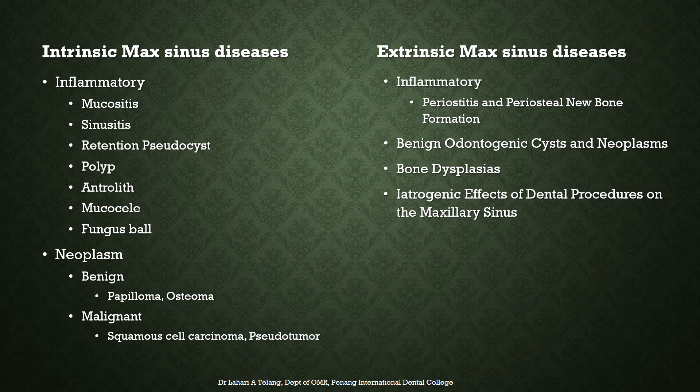Looking at examples of intrinsic maxillary sinus diseases, the most common category is inflammatory diseases which include mucositis, sinusitis, retention pseudocyst, polyp, antrolith, mucocele, and a fungus ball. Neoplasms would be either benign — most commonly papilloma or osteoma — or malignant, which is squamous cell carcinoma or a pseudotumor.